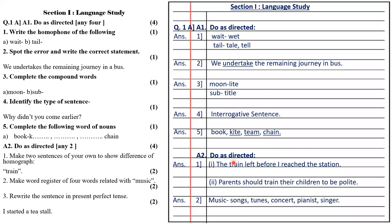Then question A2 is do as directed: make two sentences of your own to show the difference of homograph. Train is given. First sentence: the train left before I reach the station. Second sentence: parents should train their children to be polite — showing different meanings of train.